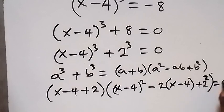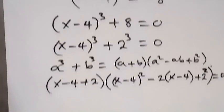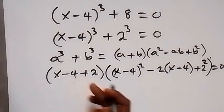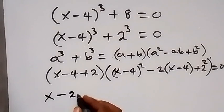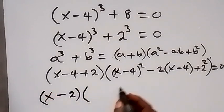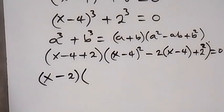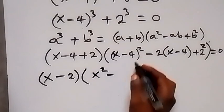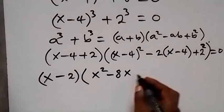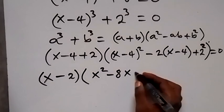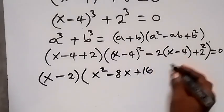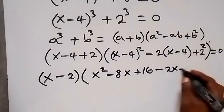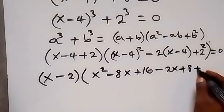That equals 0. Now we expand and simplify. Minus 4 plus 2 gives minus 2, so we have x minus 2 here. Expanding the bracket gives us x squared minus 8x plus 16. Then opening the next bracket, minus 2 times x minus 4 gives minus 2x plus 8, then plus 4.